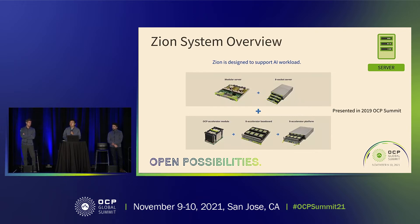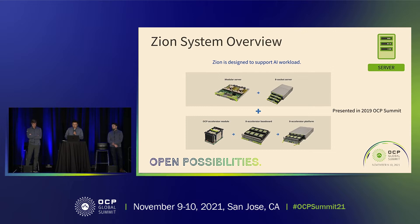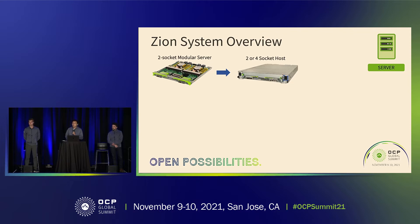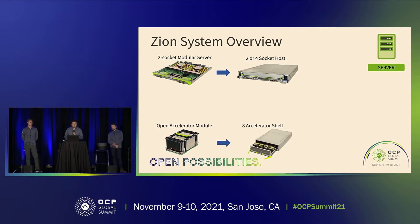Zion is designed to support AI workloads. At the 2019 OCP Summit, we first introduced our Zion system — a modular server design with an eight-socket CPU server plus eight-accelerator platform. A lot has changed since then. Today I'm introducing the new Zion definition: we keep the two-socket modular server architecture, but it's now a two- or four-socket host, and we still have the eight-accelerator shelf containing the OAM modules.